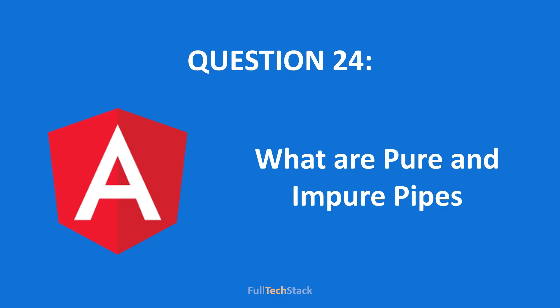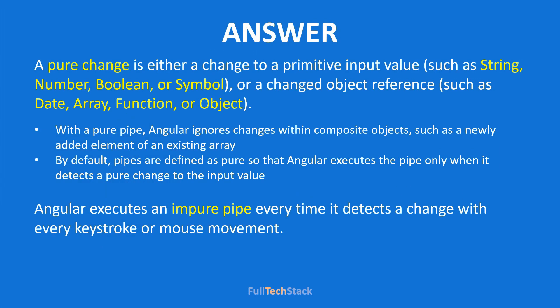If your discussion is going around pipes, another question that might come up is: what are pure and impure pipes? First, let us recall pure and impure changes in Angular. Whenever we make a change in the value of a primitive type like string, number, or boolean, or if the object reference of an array, object, or function is changed, we refer to these as pure changes. But if an element inside an array or any other change within a composite object is changed, it is referred to as an impure change.